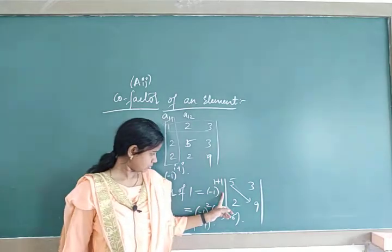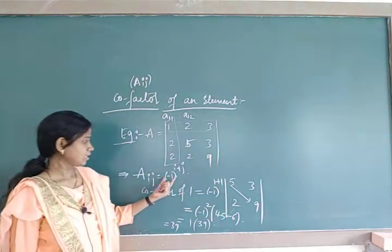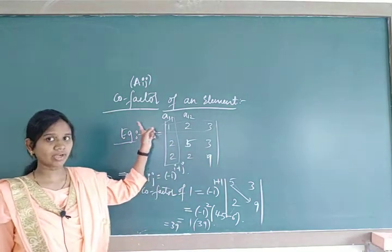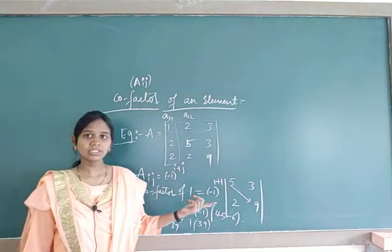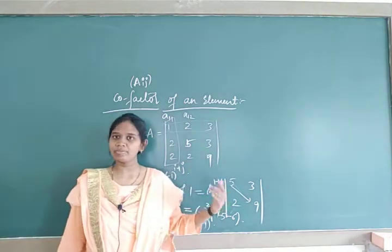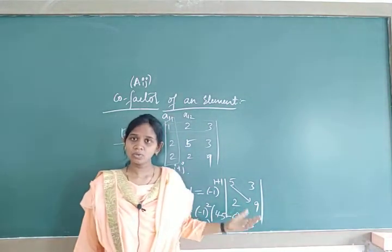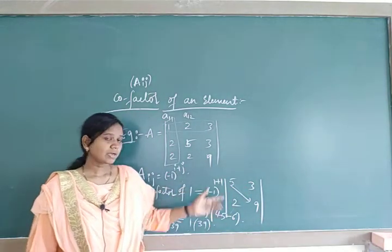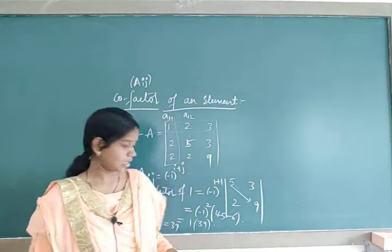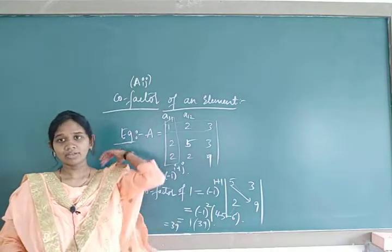To summarize: the cofactor of an element means you take the factor (−1)^(i+j), delete the row and column where the element is present to get a 2×2 determinant, then expand that 2×2 determinant to get a single number. That single number multiplied by (−1)^(i+j) gives the cofactor. The same factor formula is used for all elements, hence the name cofactor.